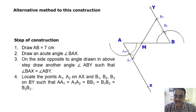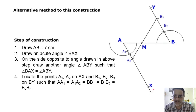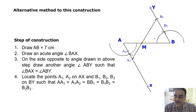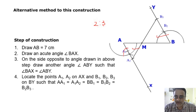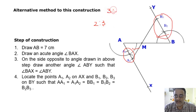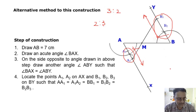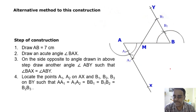So this is the alternate method. Watch this diagram carefully. First we drew AB as 7 cm, then drew one acute angle - you can draw any acute angle: 30, 45, 50, or 60 degrees. The same angle you have to draw on the other side too. Now our ratio is 2 is to 3, so here 2 equal parts and there 3 equal parts. Join the last ones.